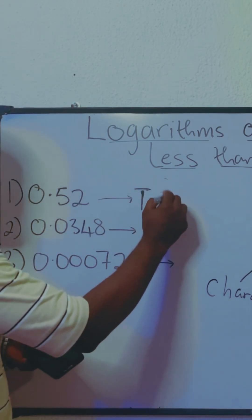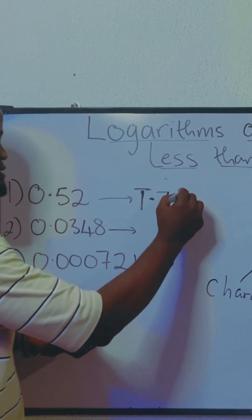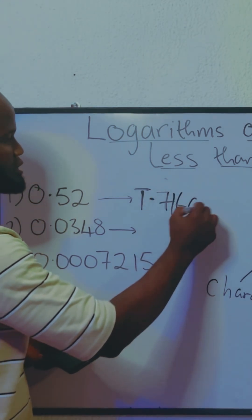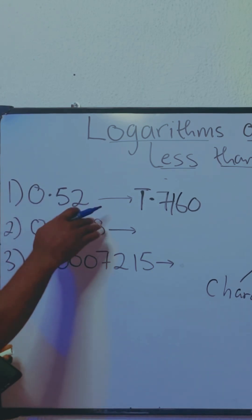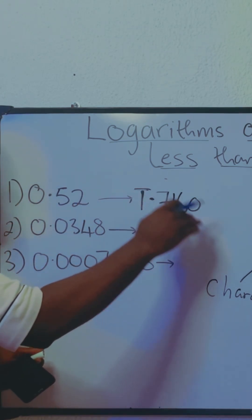We already have bar one point seven one six zero. Let's leave it at that. So the logarithm of 0.52 is bar one point seven one six zero.